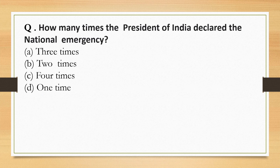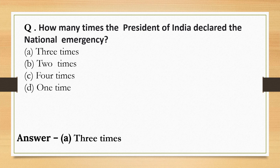How many times has the President of India declared a national emergency? Three times. National emergency is mentioned under Article 352. It was declared in 1962 during the Indo-Sino war, in 1971 during the Indo-Pakistan war, and in 1975 due to internal disturbance, declared by President Fakhruddin Ali Ahmed on the advice of Prime Minister Indira Gandhi.